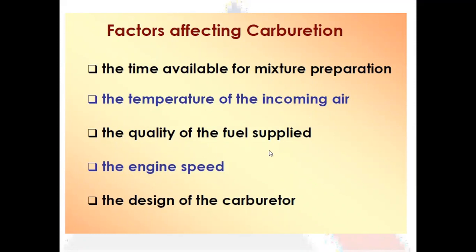Third factor is the quality of the fuel supply — this depends on the cetane number or octane number of the fuel depending on whether it is a petrol or diesel engine. Higher cetane or octane number means better fuel that atomizes easily. Fourth is the engine speed — at lower or cruising speeds we need a lean mixture; at higher speeds or during acceleration we need a richer mixture. Fifth is the design of the carburetor — different types are available and we can choose the optimum carburetor for the automobile's requirement.